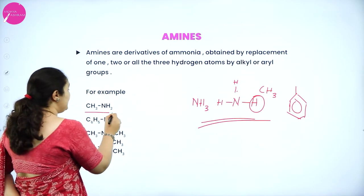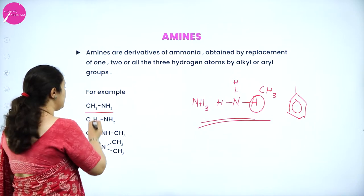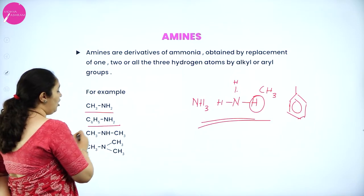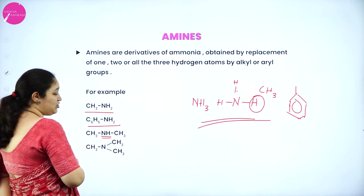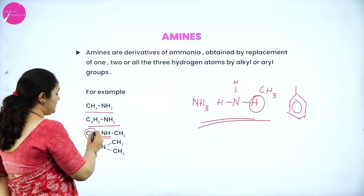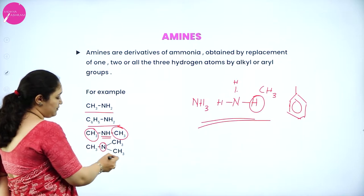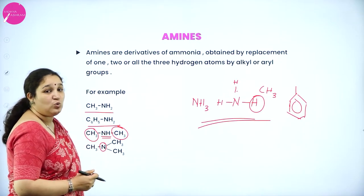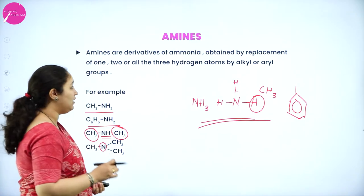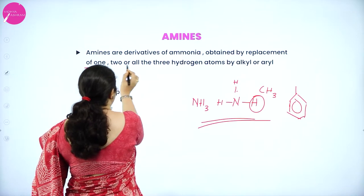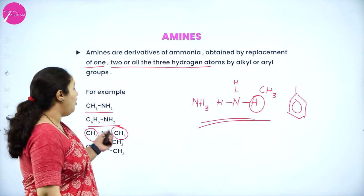For example, you have CH3NH2 — from NH3, one hydrogen is substituted with a CH3 group — or C6H5NH2. From NH3, two hydrogen atoms can be substituted with CH3 groups, or all three hydrogen atoms of the nitrogen atom can be substituted with alkyl groups. So amines are derivatives of ammonia obtained by replacement of one, two, or all three hydrogen atoms with alkyl or aryl groups.